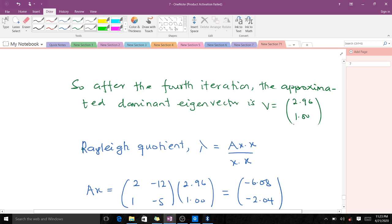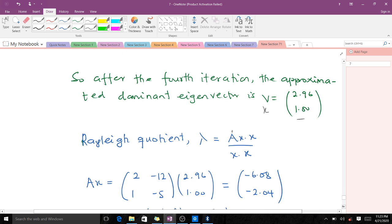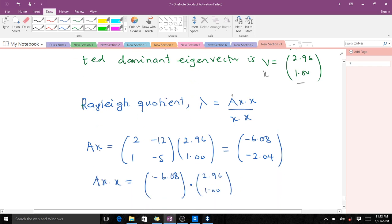We use the Rayleigh quotient to find the dominant eigenvalue. It is given by λ = (Ax · x) / (x · x), where x is what we just found. λ is the dominant eigenvalue we're looking for, and A is our matrix. Ax gives us this result from the matrix-vector multiplication.